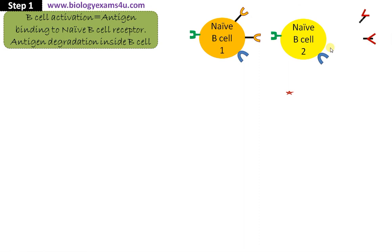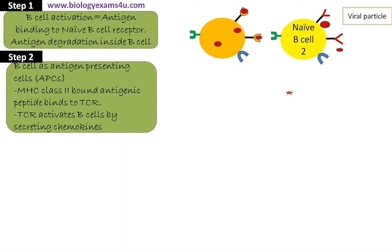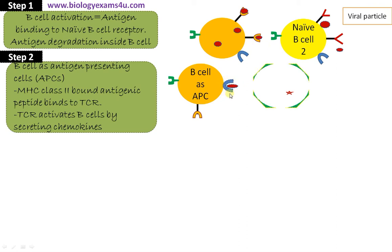This is another B cell — B cell 2 — which is having a different specificity. There are numerous B cells inside the system with different specificities directed against different pathogens or different epitopes of pathogens. Suppose this is a viral particle; this viral particle has bound to the B cell receptor, causing activation of the B cell. Some of the antigenic or viral particles are engulfed by the B cell. In this pathway, this B cell acts as an antigen presenting cell; this engulfed viral particle will be degraded and presented on MHC class 2.